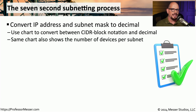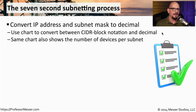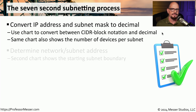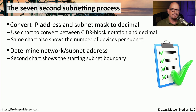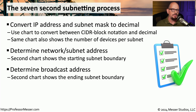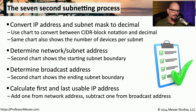The seven-second subnetting process is a four-step process. The first step is to convert the IP address and subnet mask to decimal, which is necessary if provided in CIDR block notation. The second step is to determine the subnet address, which you may do in your head or by referencing your chart. That same chart shows the broadcast address by looking at the last address in the range. From there, it's easy to determine the first and last usable IP addresses by adding one to the subnet address and subtracting one from the broadcast address.